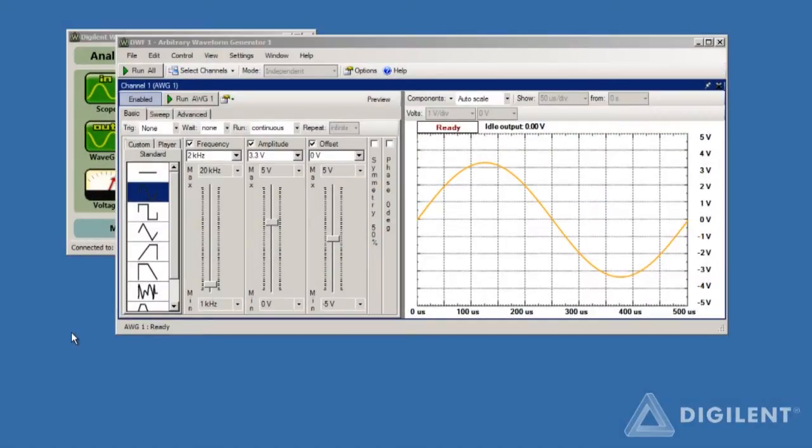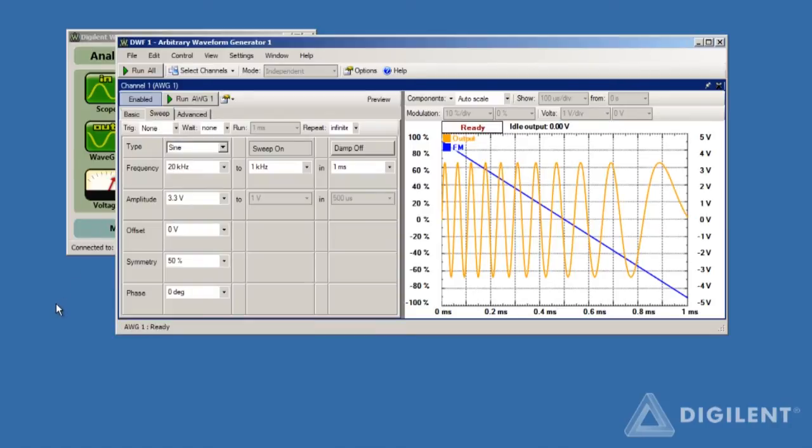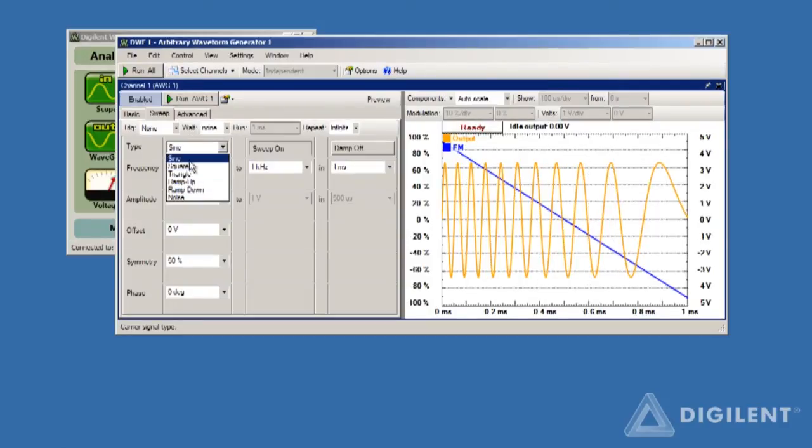In order to create a sinusoidal sweep, click on the Sweep tab on the waveform generator. To choose a sinusoidal sweep, select Sine under the signal type. We can also create sweeps using a variety of other common functions.